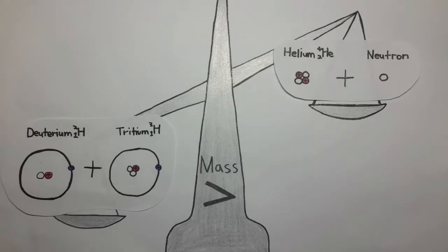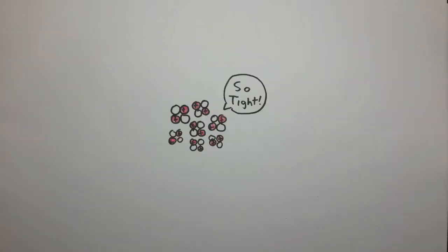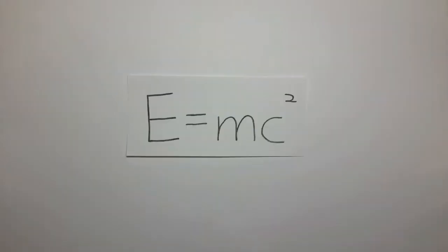If the combined nuclear mass is less than that of iron at the peak of the binding energy curve, then the nuclear particles will be more tightly bound than they were in the lighter nuclei, and that decrease in mass is converted into energy according to the equation E equals mc squared.